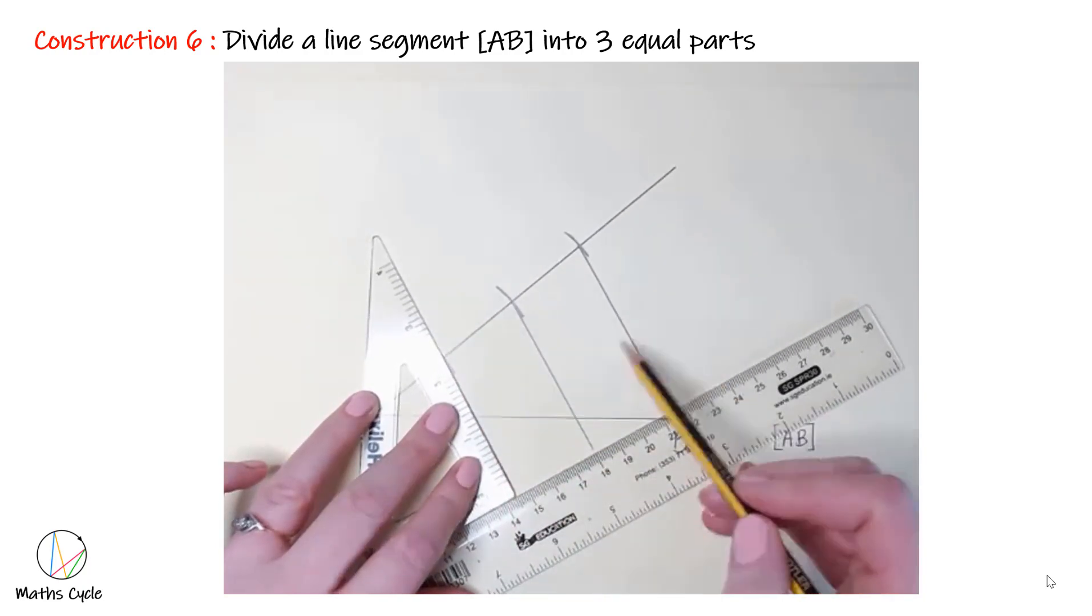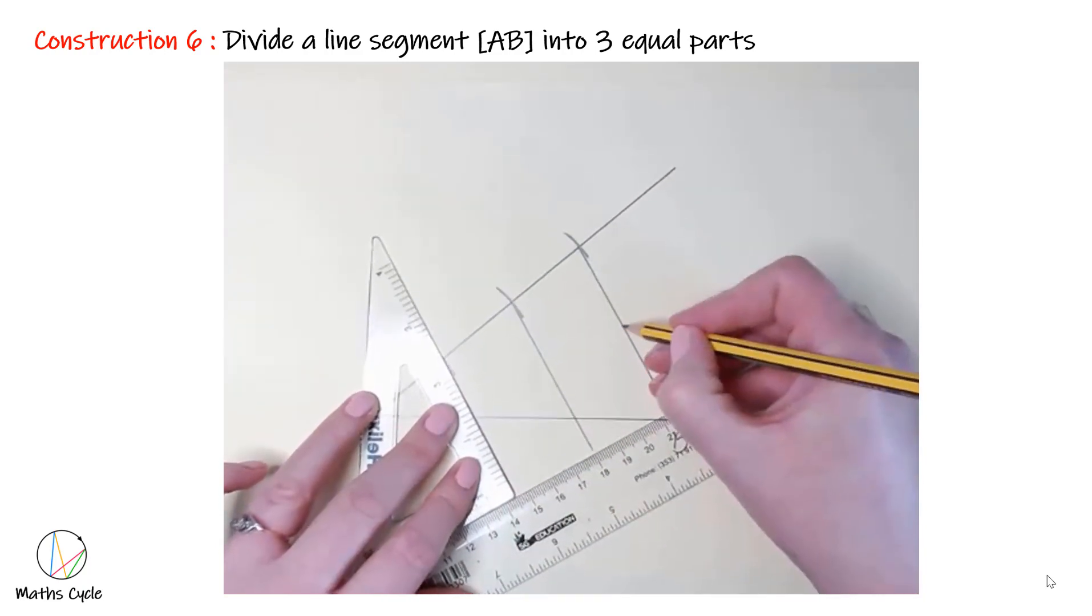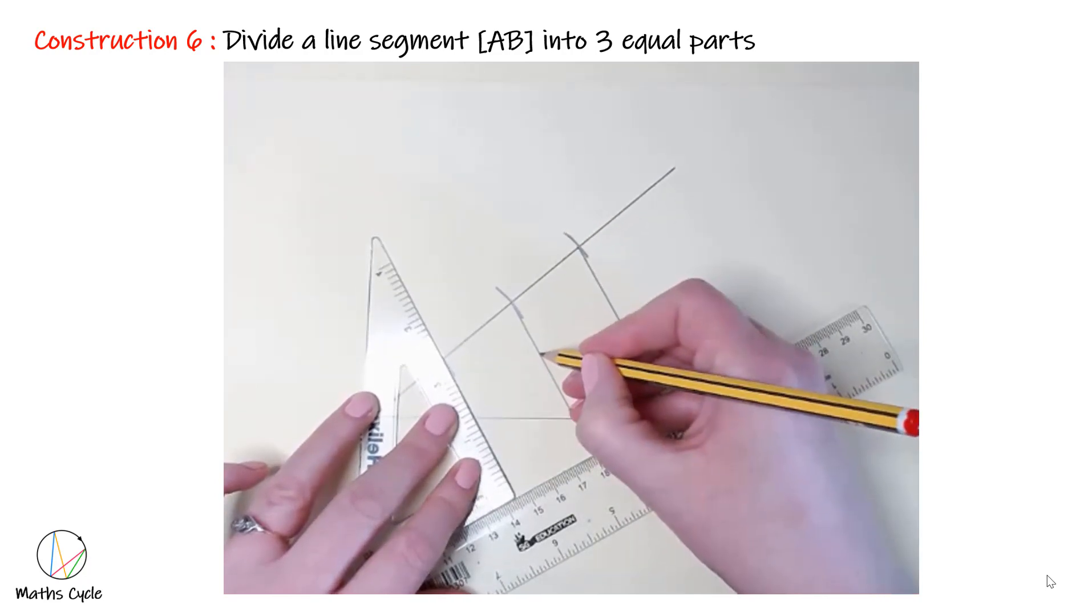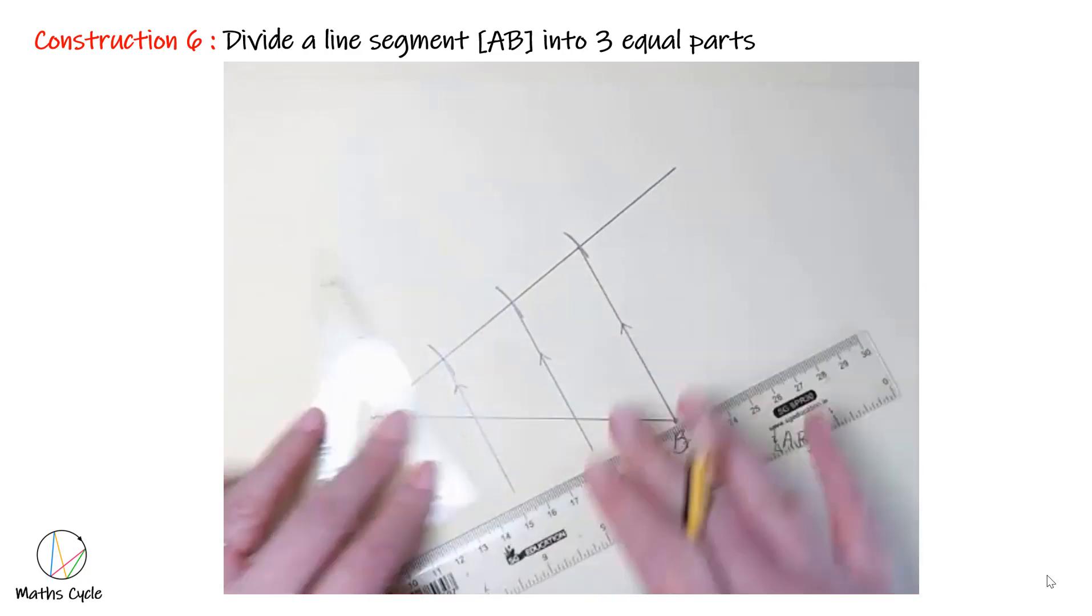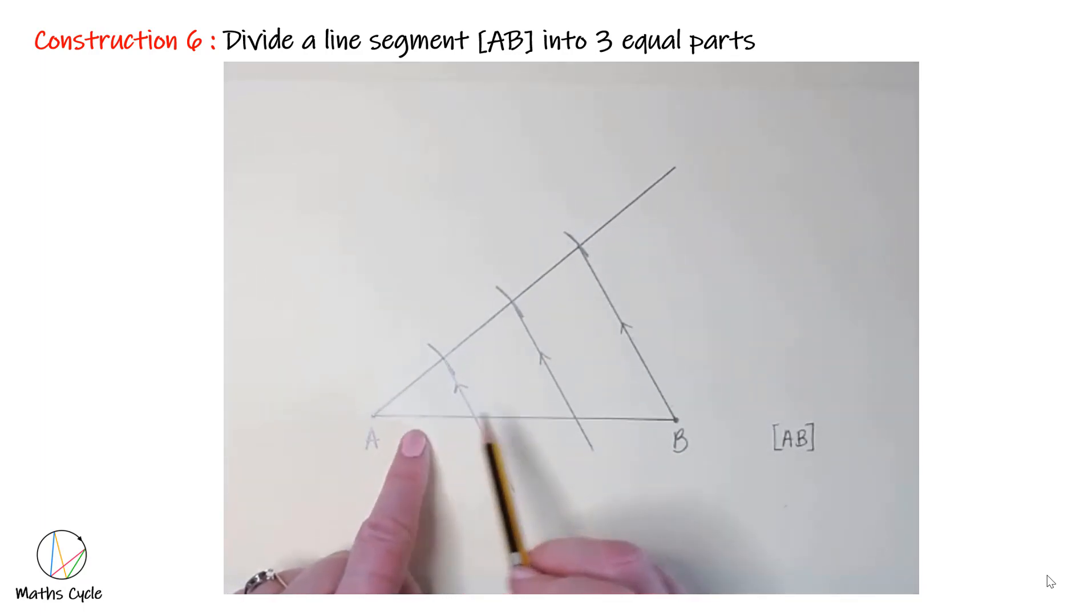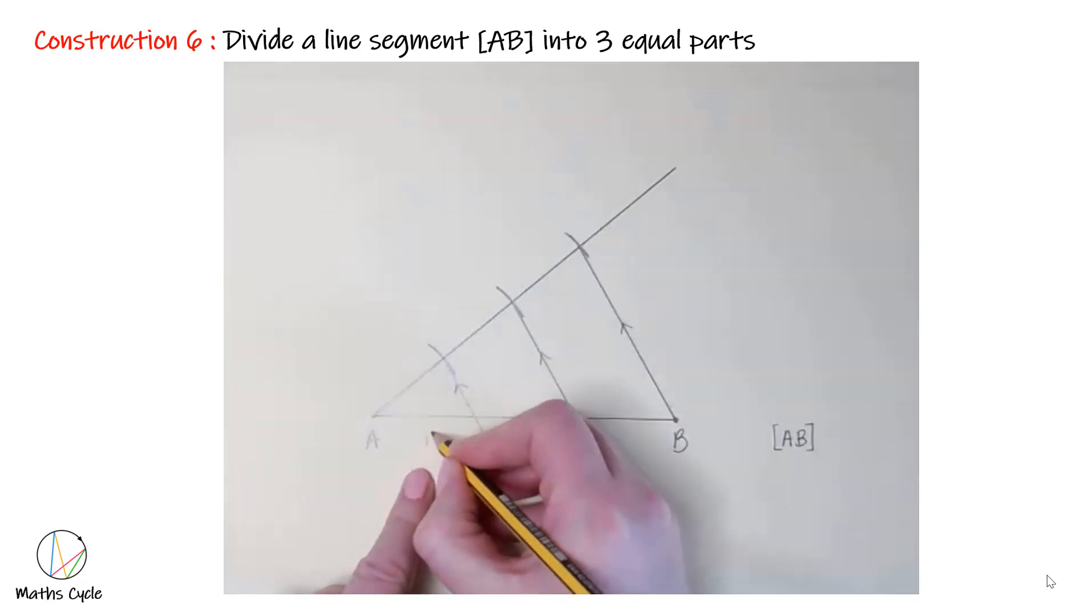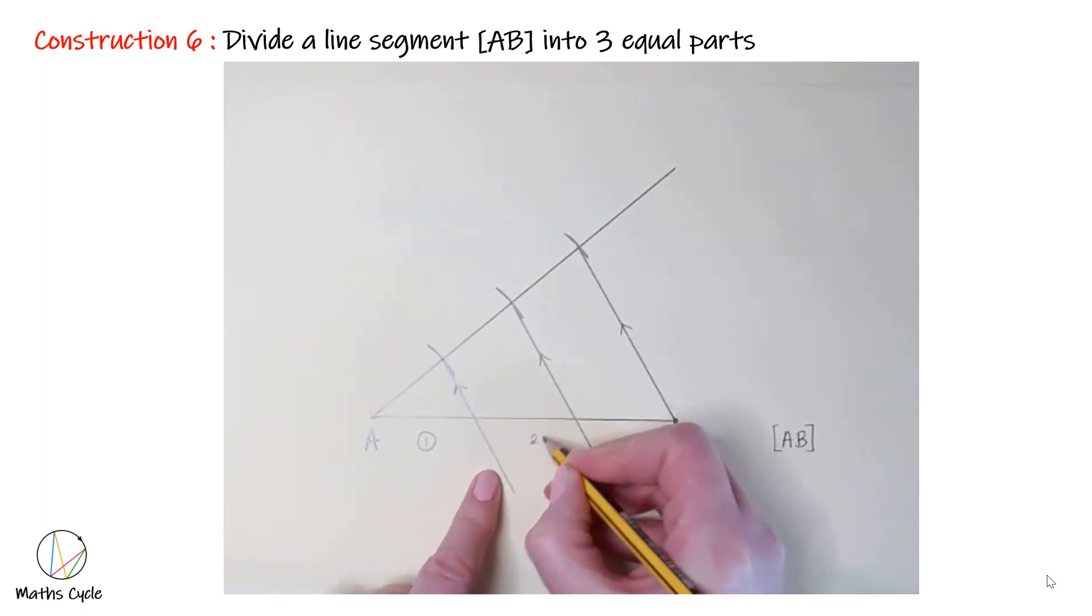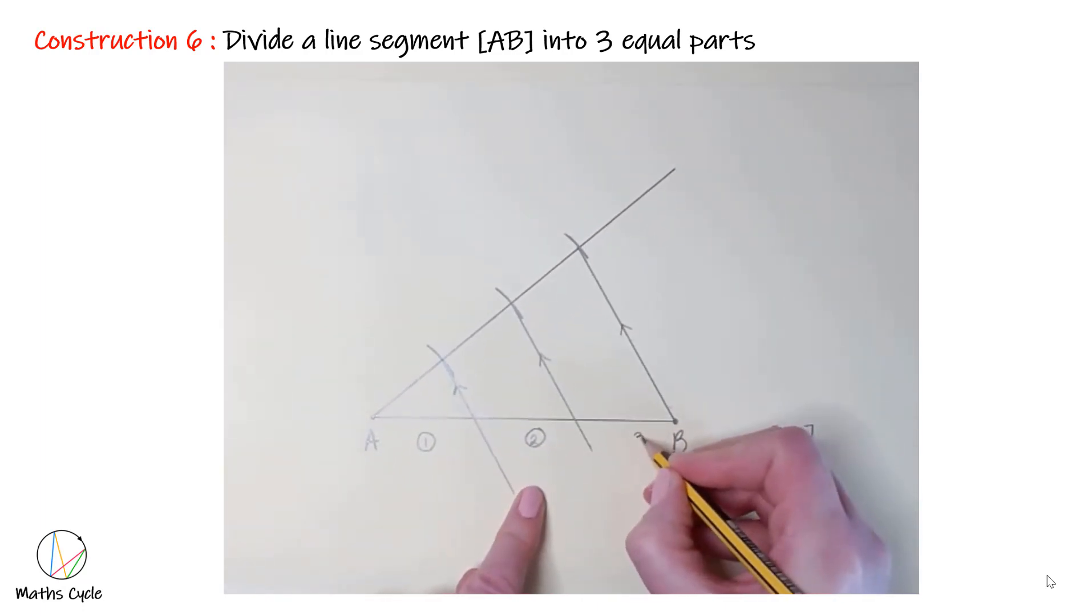These parallel lines will cut AB into three equal parts. So this part should be equal to this part, should be equal to this part. We can check because we'll see if they divided it up into